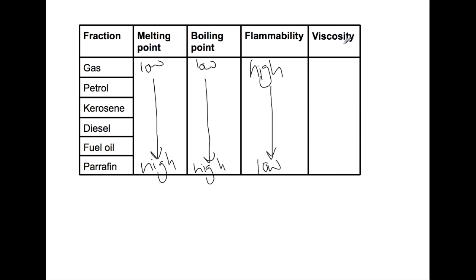Viscosity is a measure of how thick your liquid is. This is based on how long your carbon chains are. For the small carbon chain fractions it has a low viscosity, whereas for the high carbon chain fractions we have a high viscosity.